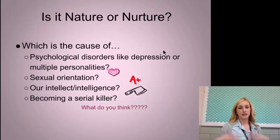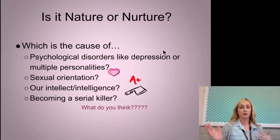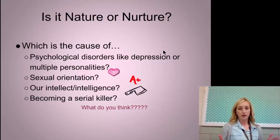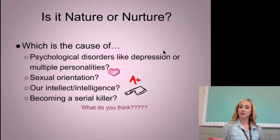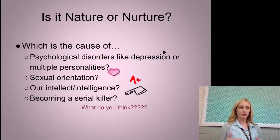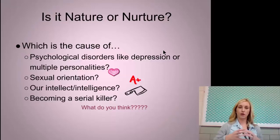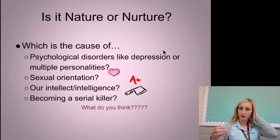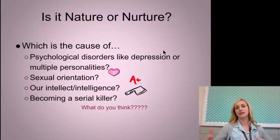Some things we can discuss in the nature vs. nurture debate: psychological disorders like depression or multiple personalities — does that stem from nature or nurture? Or even sexual orientation — is that genetically determined or learned through environment? Are we born with a set amount of intelligence? Or even becoming a serial killer — are serial killers born or are they taught? The research supports the overall accepted idea in psychology that nurture works on what nature endows — it's a combination of both. The environment works on what our biology gives us.